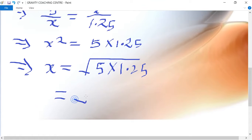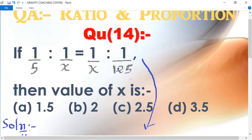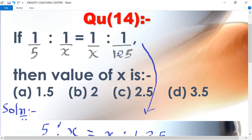Equal to root under 6.25 and its root is 2.5 which is the answer. So, option c is the right answer.